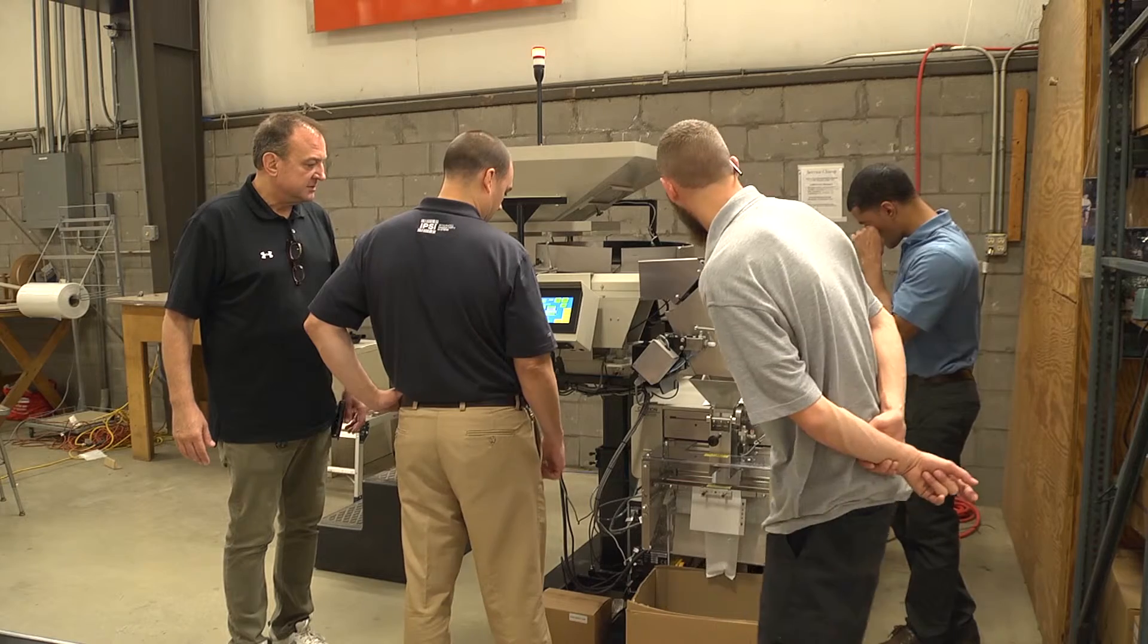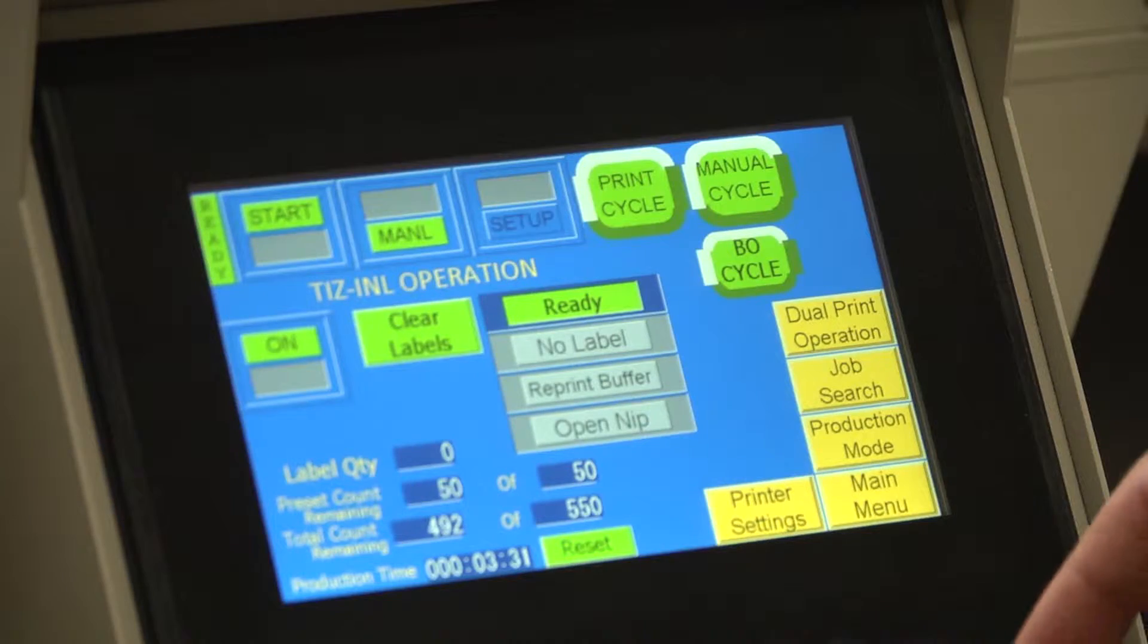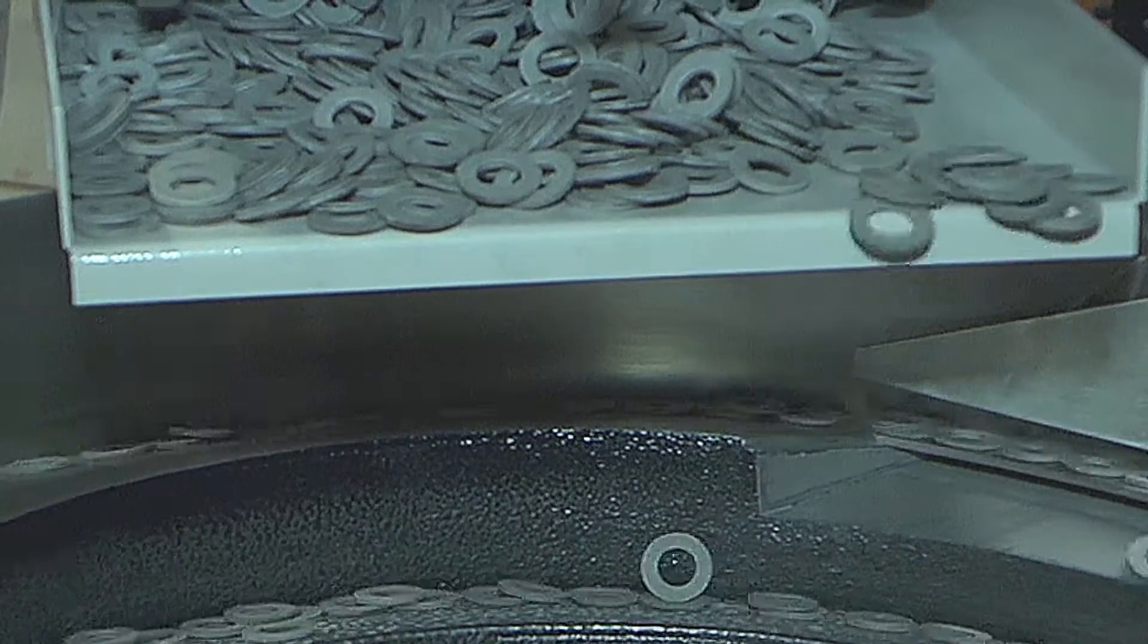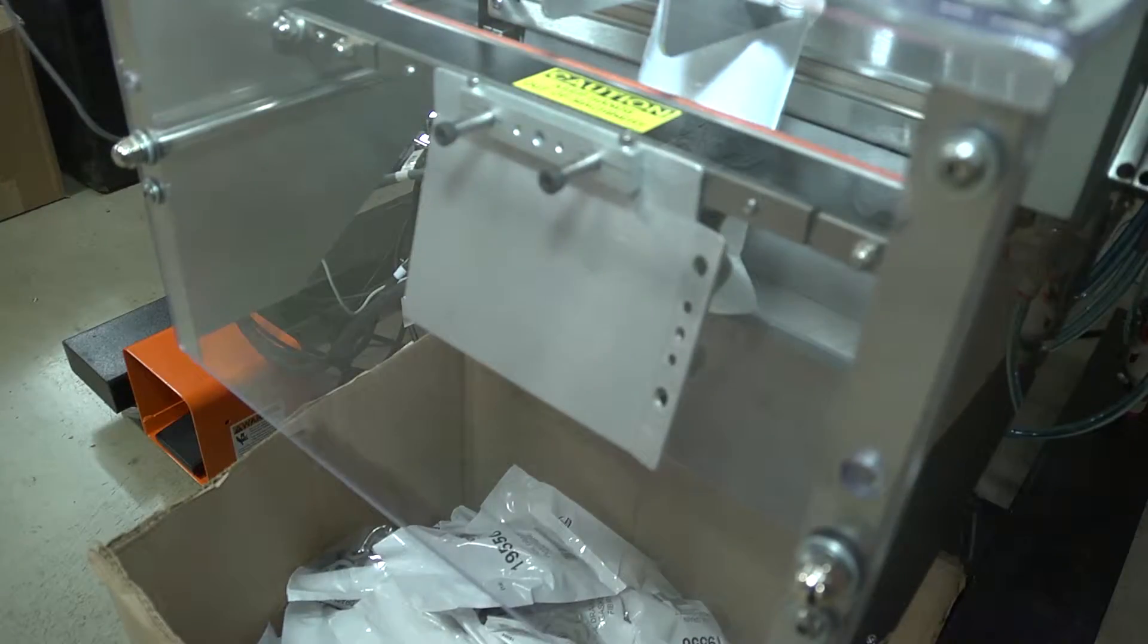There's human machine interfaces that are graphic user displays that give you job information. Tell you real-time how many parts are being put in a bag. You know gives the user real-time interfacing to what's happening on the equipment that you didn't have 20-30 years ago.